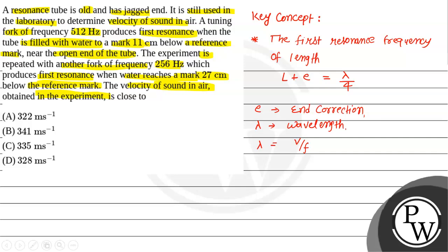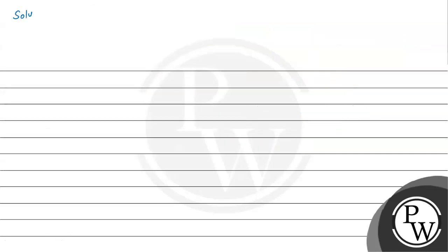So let's move to the solution part and let's write the given conditions here. First, frequency f1 which we have given is 512 hertz. In this case the length of water is 11 cm,